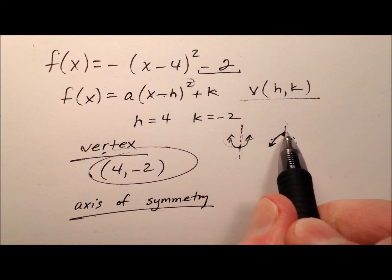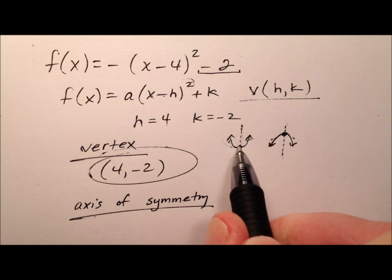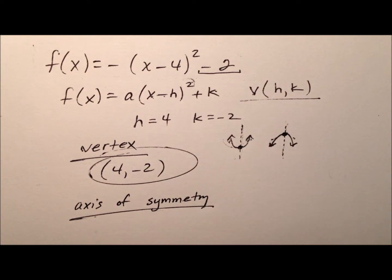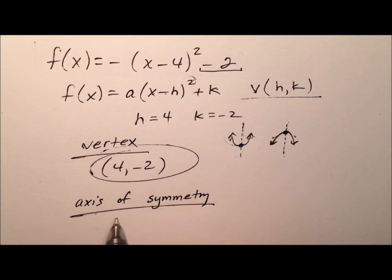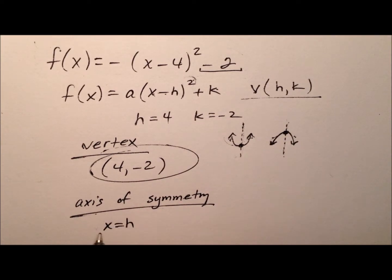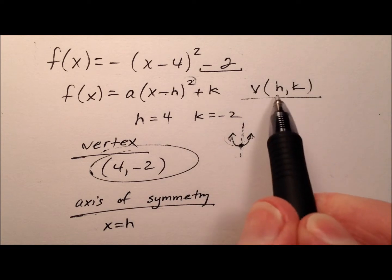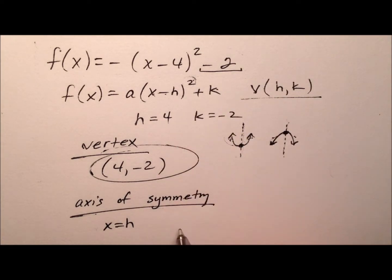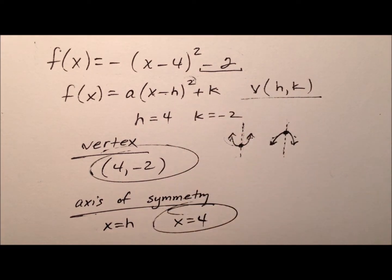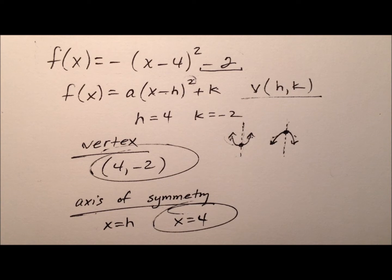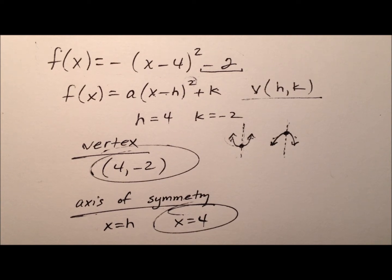We know the axis of symmetry passes through the vertex. So in our case, the axis of symmetry is x equals h. For us, it'll be x equals 4 — that vertical line with equation x equals 4.